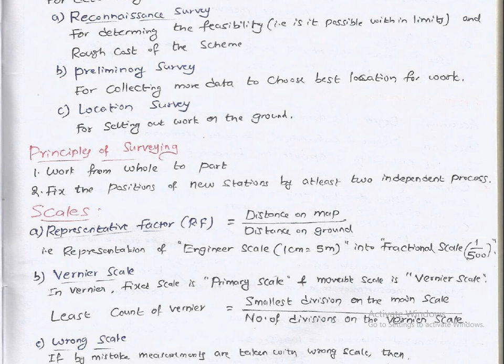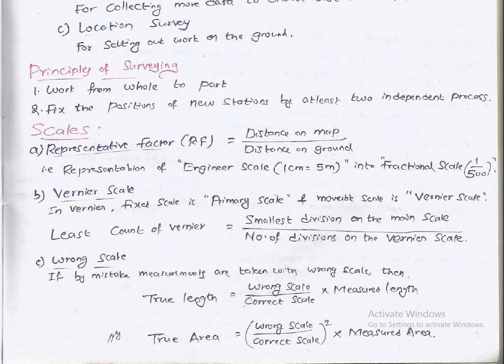Principle of surveying: work from whole to part, fix the position of new stations by at least two independent processes. Scales include representative factor RF, distance on map upon distance on ground. Vernier scale: fixed scale is primary scale and movable scale is vernier scale. Least count of vernier equals smallest division of main scale upon number of divisions of vernier scale. For wrong scale, true length equals wrong scale upon correct scale times measured length, and true area equals wrong scale upon correct scale whole square times measured area.